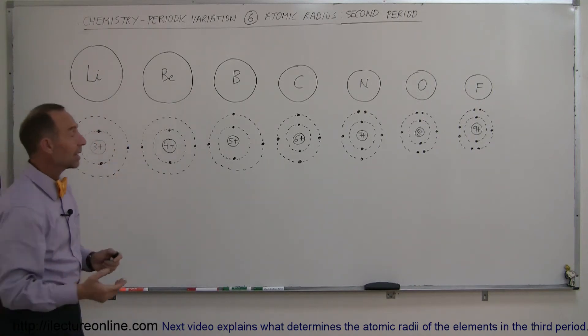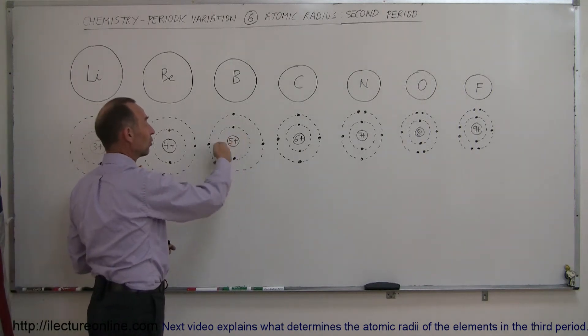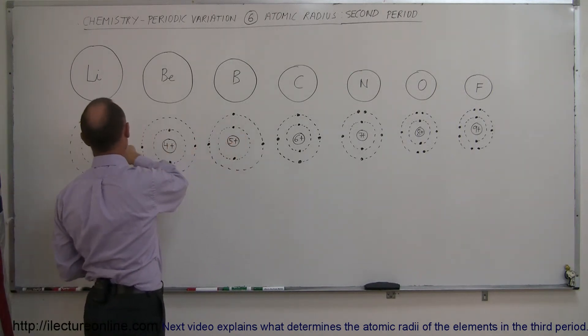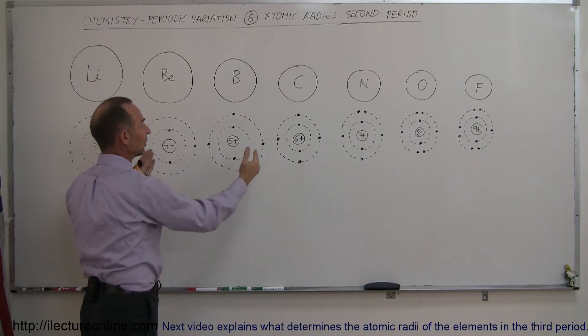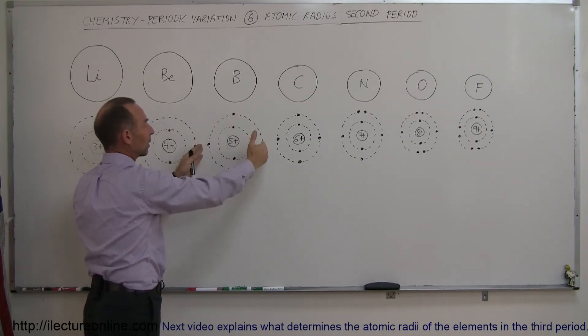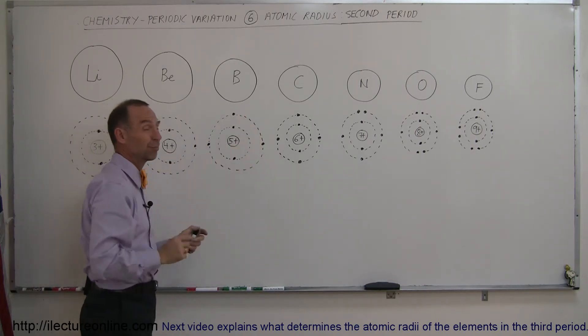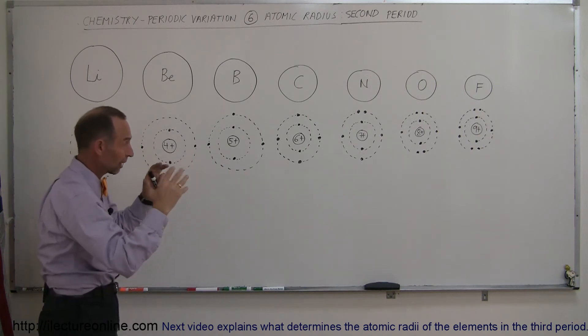Going out to boron, same thing again. The screening effect is no different as it was for beryllium as it is for lithium, and so therefore the force of attraction to the outer three electrons is even stronger now with five protons in the nucleus, and therefore it gets pulled in.